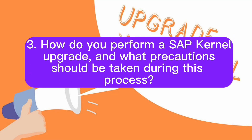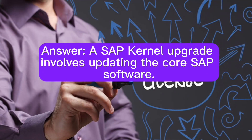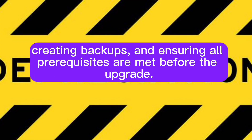Question 3: How do you perform a SAP kernel upgrade, and what precautions should be taken during this process? A SAP kernel upgrade involves updating the core SAP software. Precautions include thorough testing in a non-production environment, creating backups, and ensuring all prerequisites are met before the upgrade.